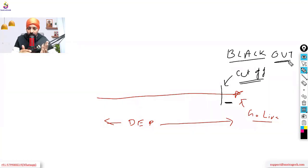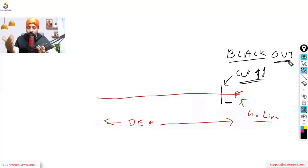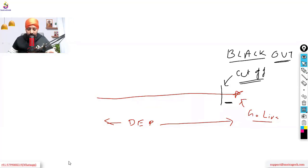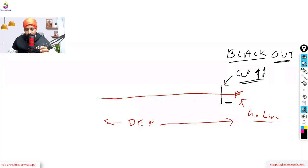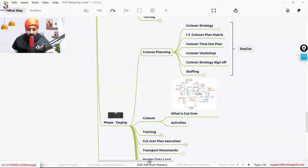The blackout period is when the existing system — Microsoft Dynamics or any system you are currently using — is stopped. We say that after two or three days, you will be able to start operations in the new system. How many days of blackout period would you require in the implementation?